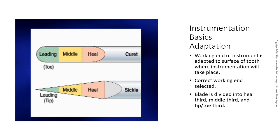For instrument adaptation, you want to select the correct end of the instrument. The toe or tip third is adapted to the contour of the tooth. Two to three millimeters of the tip or toe — the leading third — are adapted. The line angles require instruments to be rolled between the fingers for correct adaptation to the tooth. The leading portion shown in green is what you want to use, going from green to yellow to red.